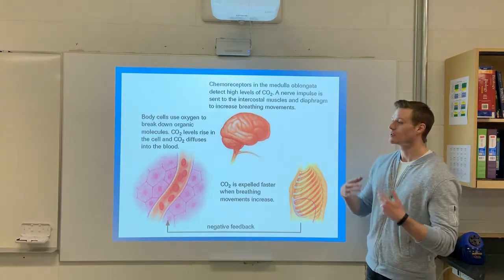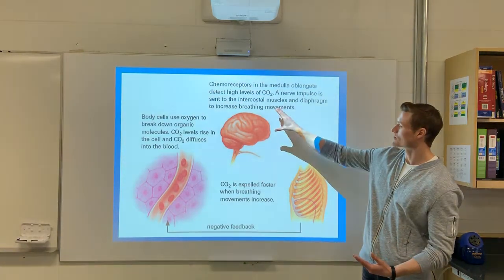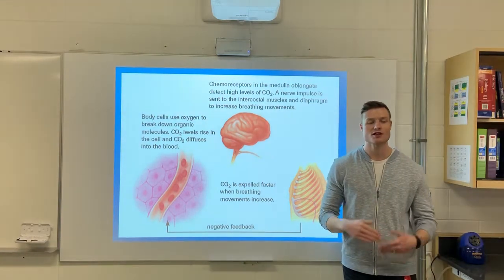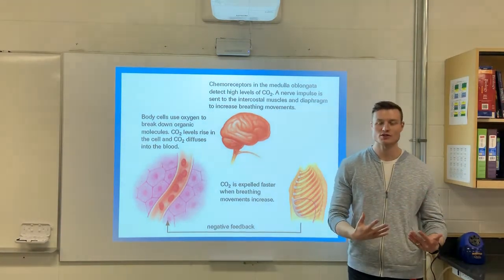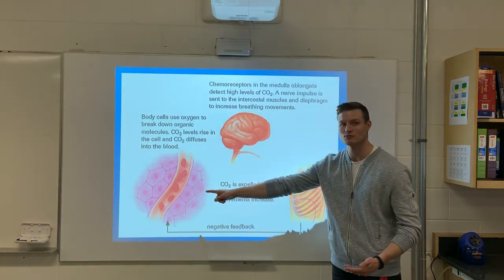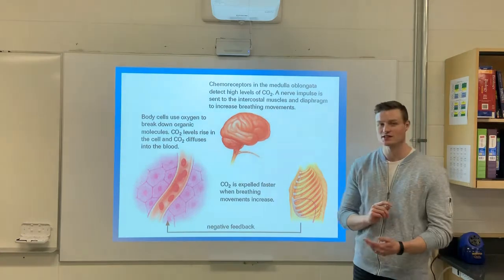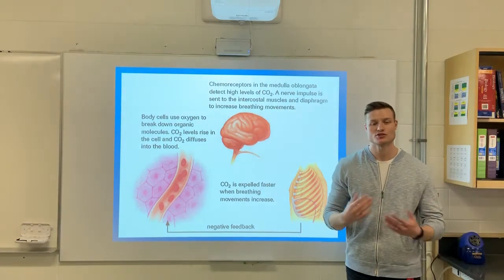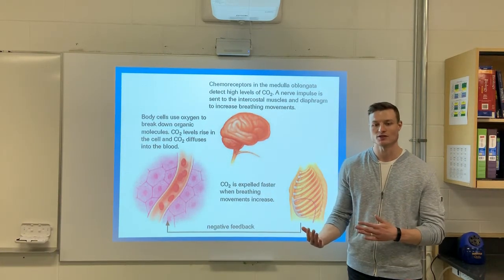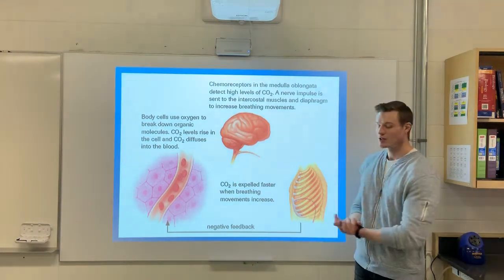To recap: if CO2 builds up in the blood, chemoreceptors detect this and send a signal to your intercostal muscles and diaphragm to increase breathing until CO2 levels drop to a reasonable level. The brain then stops sending the signal to your intercostal muscles and diaphragm, lowering your breathing rate. That's your CO2 chemoreceptors.